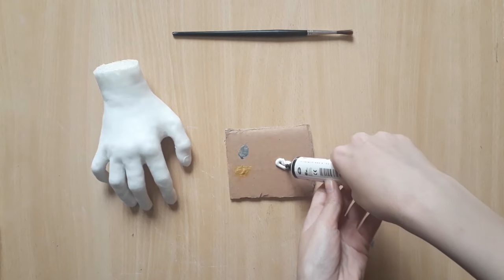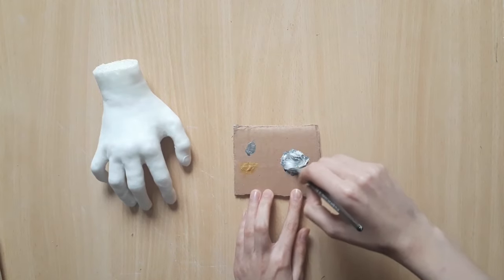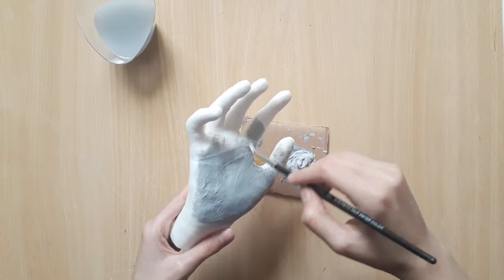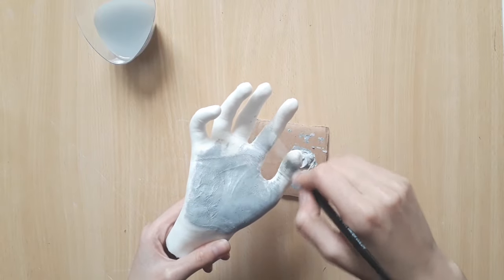Now for the hand, we're gonna mix white and black together to get a very light grey. And then obviously paint our hand with it.